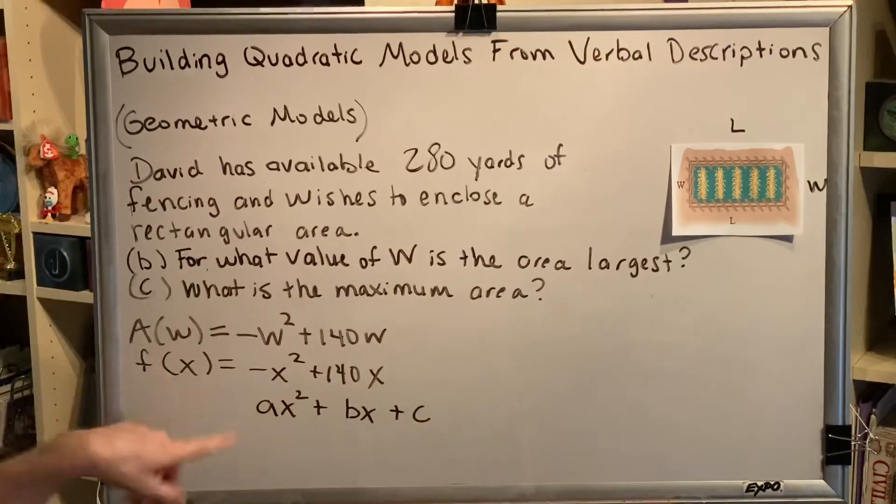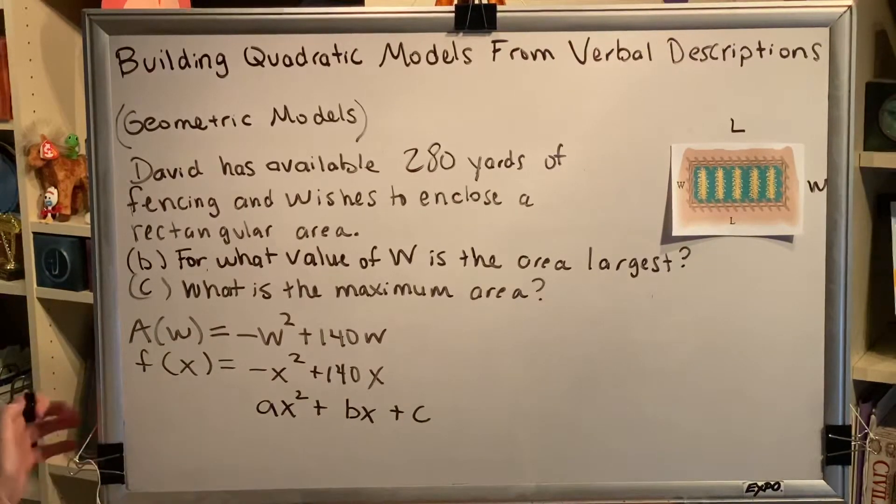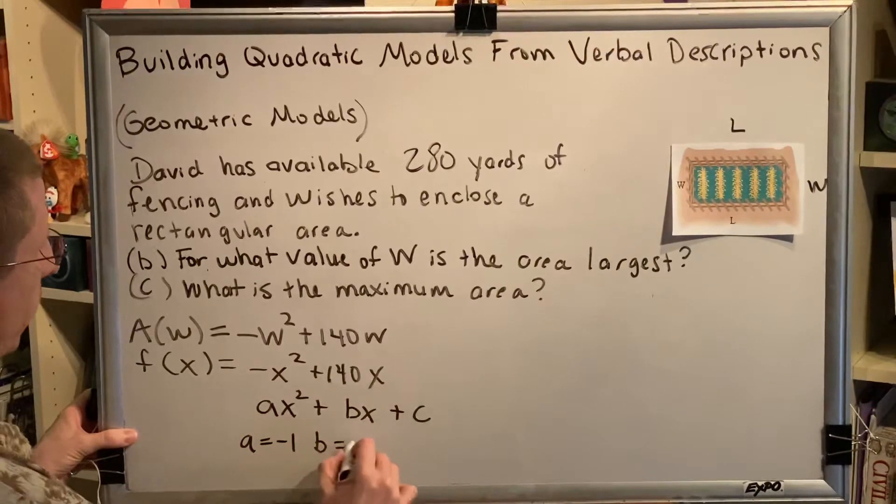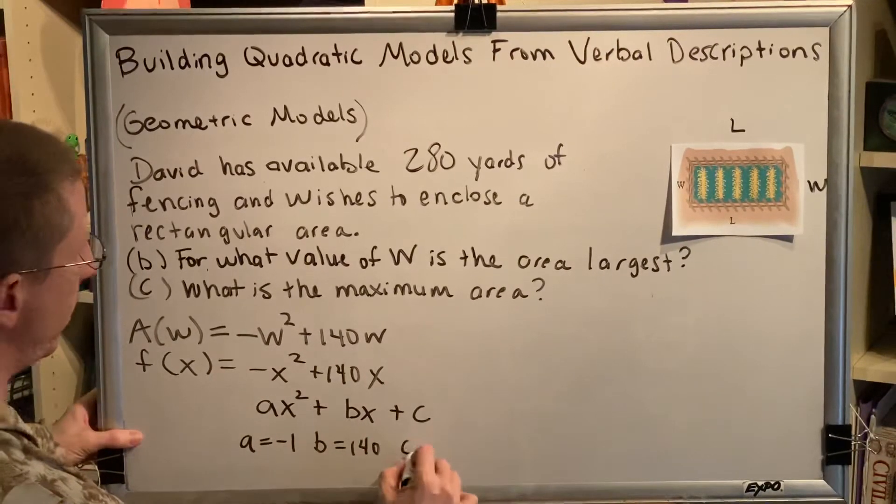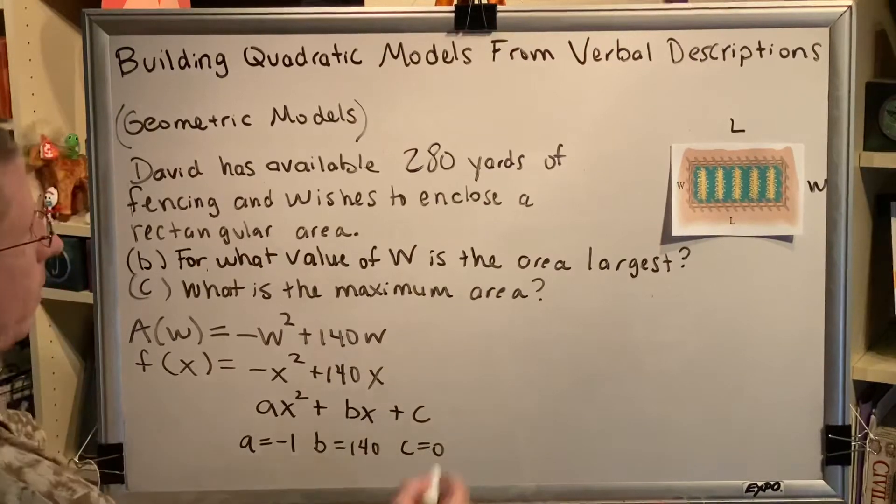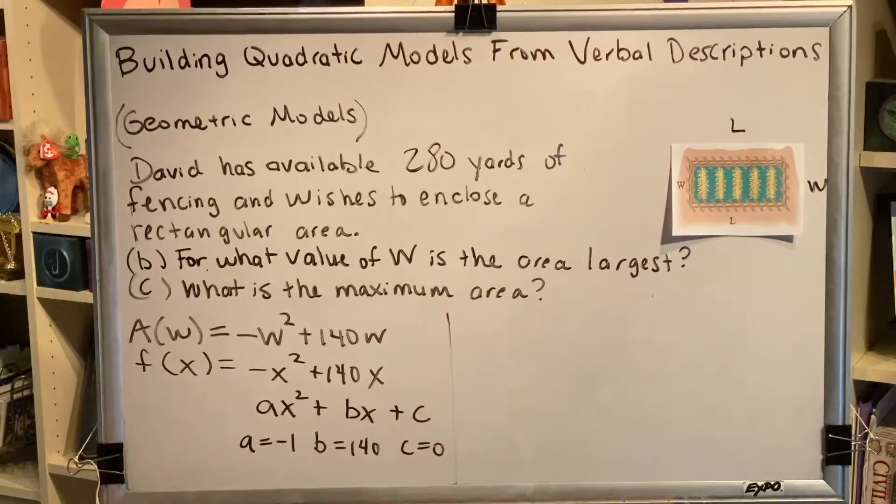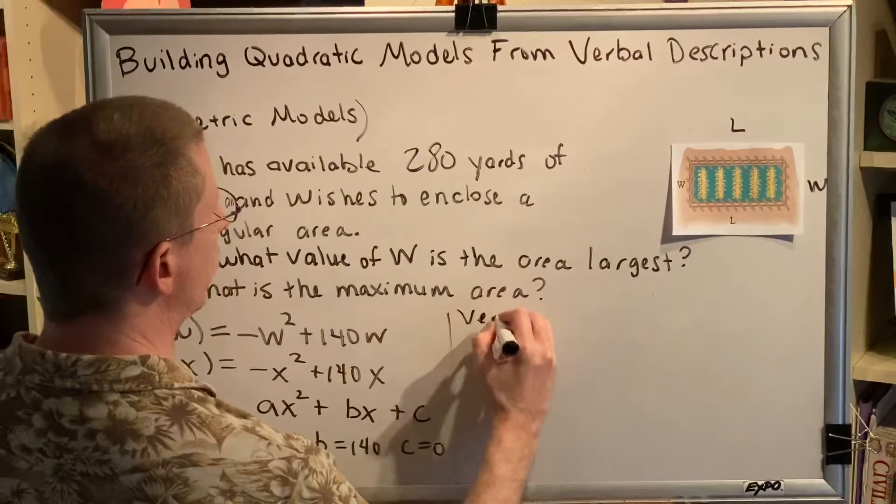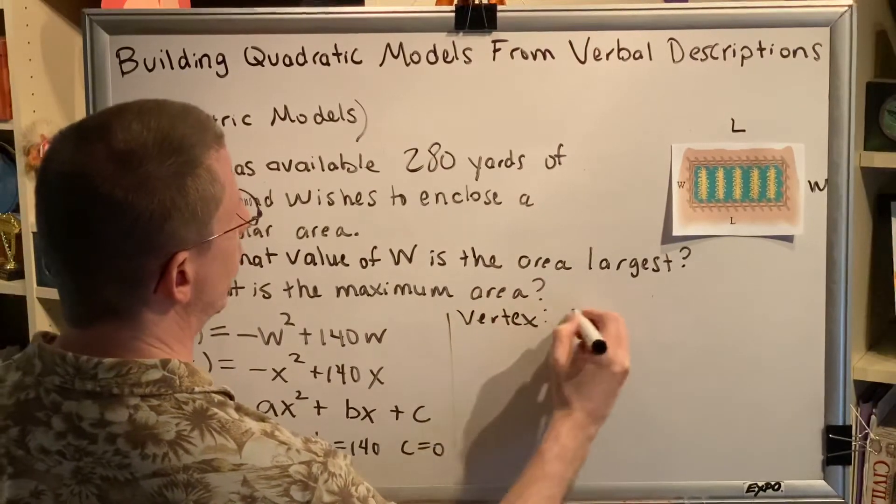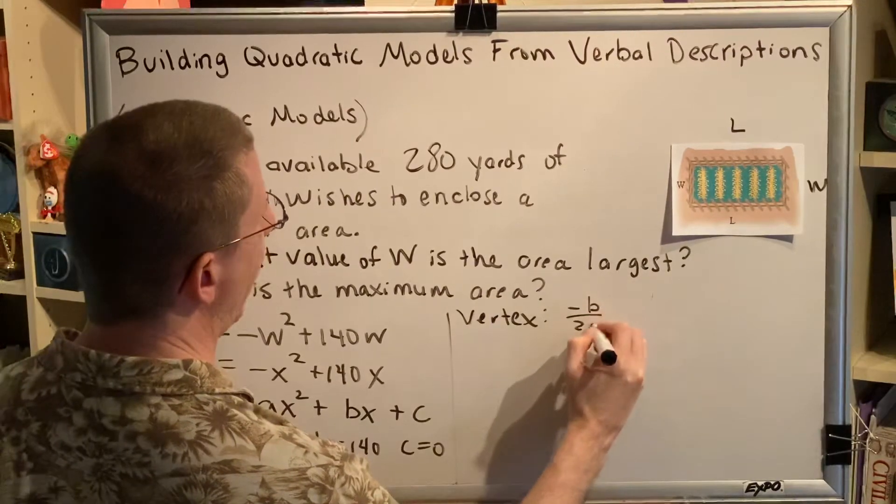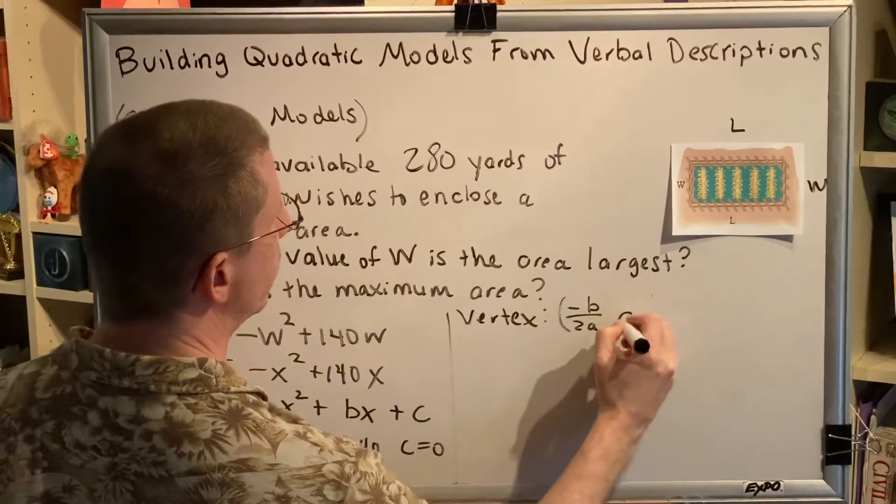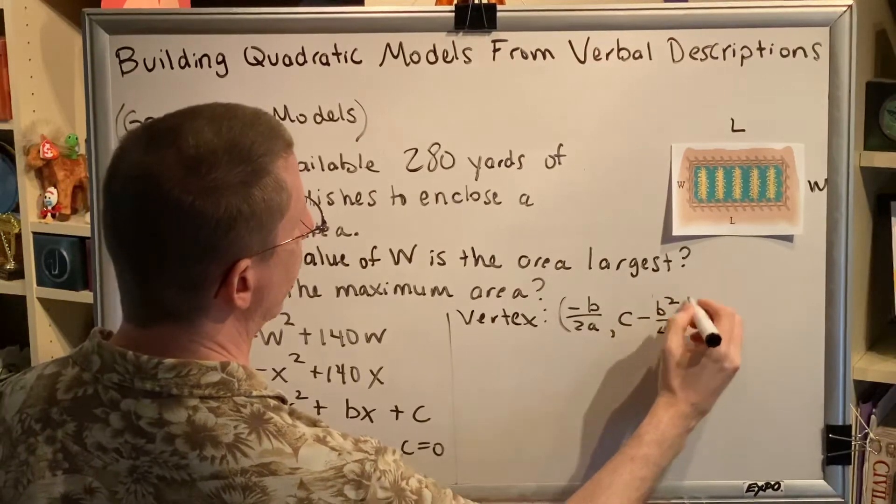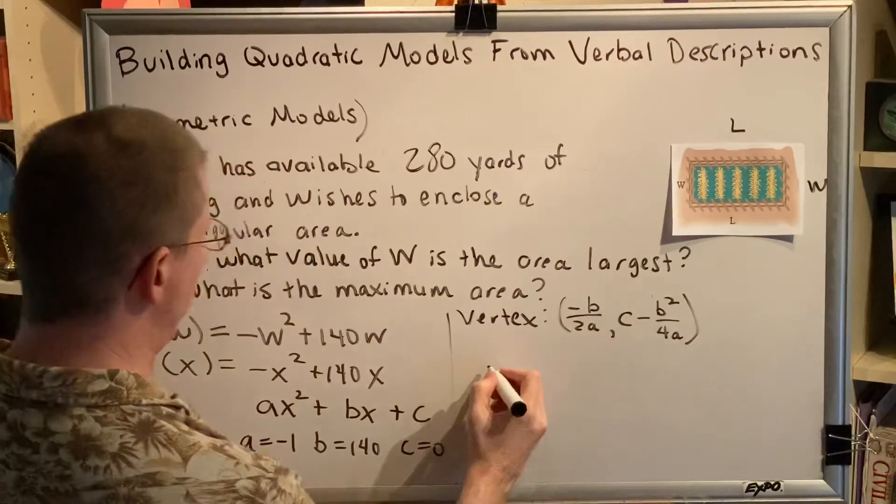In fact, by writing these things side by side, it's easy for us to determine our coefficients. a is equal to negative 1, b is equal to 140, c is equal to 0. Now, when you're looking for a vertex and you know a, b, and c, all you have to do is plug into your vertex formula. The vertex formula is negative b over 2a, comma, c subtract b squared over 4a. Let's plug into the formula and see what we get.